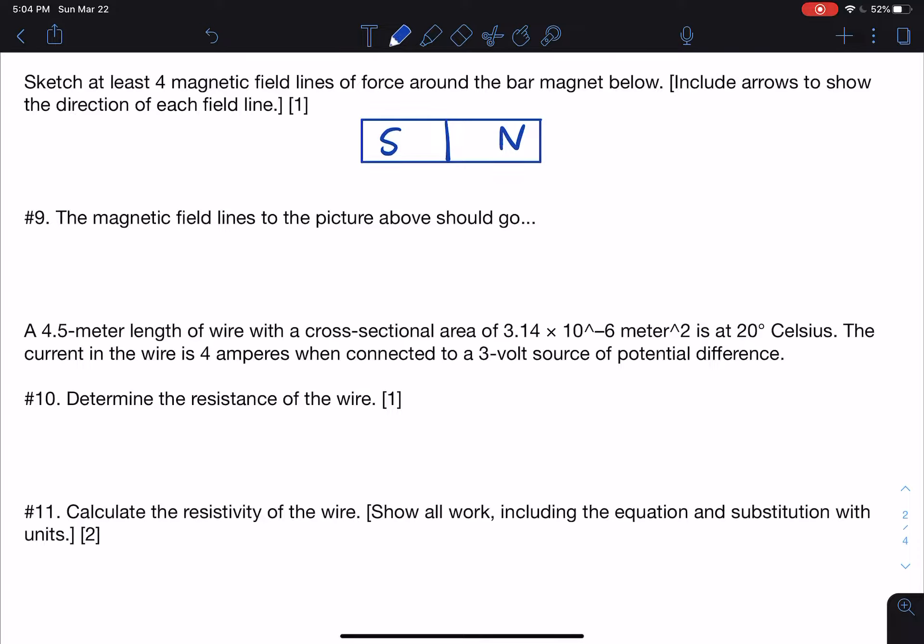Now obviously you can't draw this on the computer. If this were a paper test, you would be asked to draw this. So the first thing you need to know is, do the field lines go from north to south or south to north? And this is just one of those things you're going to have to have memorized.